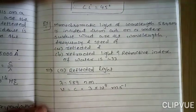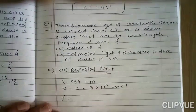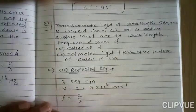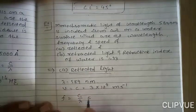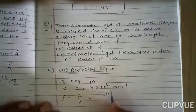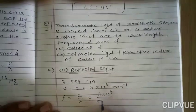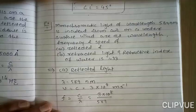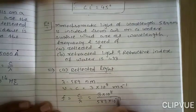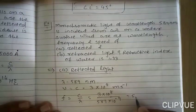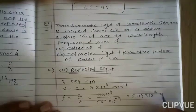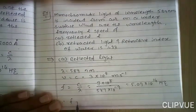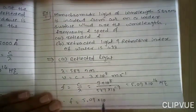Now we calculate the frequency. The formula is frequency F = V/λ (or C/λ). So F = C/λ. The value of C is 3×10⁸ m/s and lambda is 589 nanometers. We convert nanometers to meters: 1 nanometer = 10⁻⁹ meter, so lambda = 589×10⁻⁹ m.